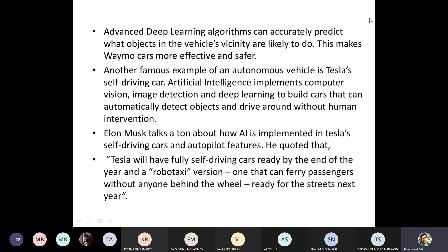Another famous example of autonomous vehicles is Tesla's self-driving car. AI implements computer vision, image detection, and deep learning to build cars that can automatically detect objects and drive without human intervention. Elon Musk talks a lot about how AI is implemented in Tesla's self-driving cars and autopilot features, and Tesla plans to have a fully self-driving auto-taxi version ready for the streets.